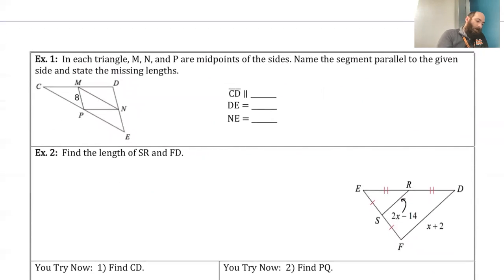So let's look at a couple more examples here. In each triangle, M, N, and P are midpoints of the sides. Name the segment parallel to the given side and state the missing lengths. So we got midpoints here, here, and here. So CD is that one. So it needs to be parallel to one of the mid-segments, which in this case is going to be PN. The length of DE is right here, and the length of NE is this one. So with a mid-segment, we know that the mid-segment itself is half of that third side.